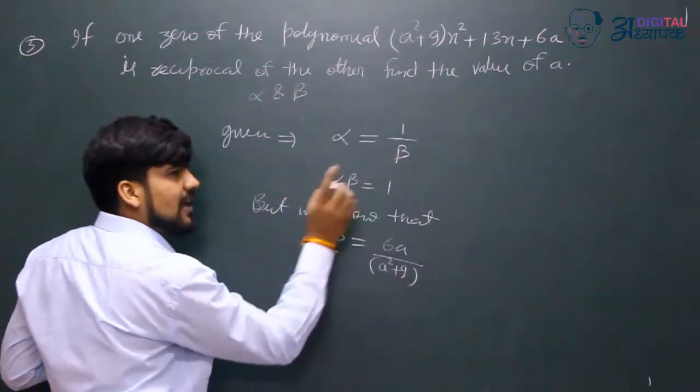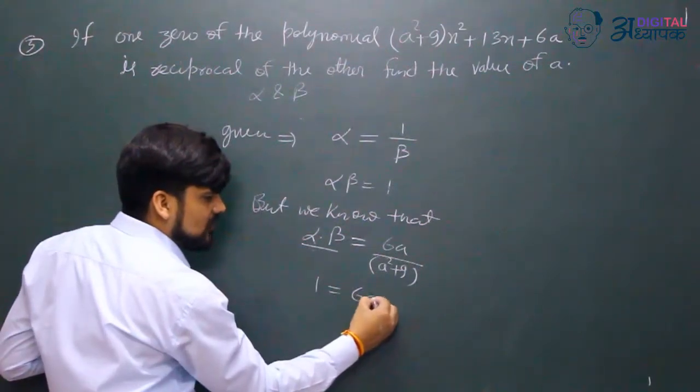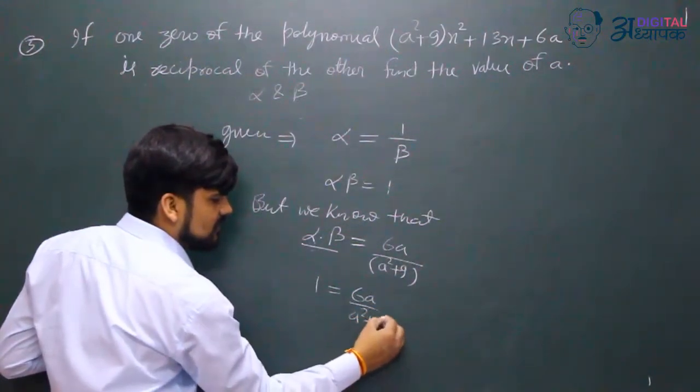But alpha into beta value is 1 as given. So one equals 6a upon a²+9.